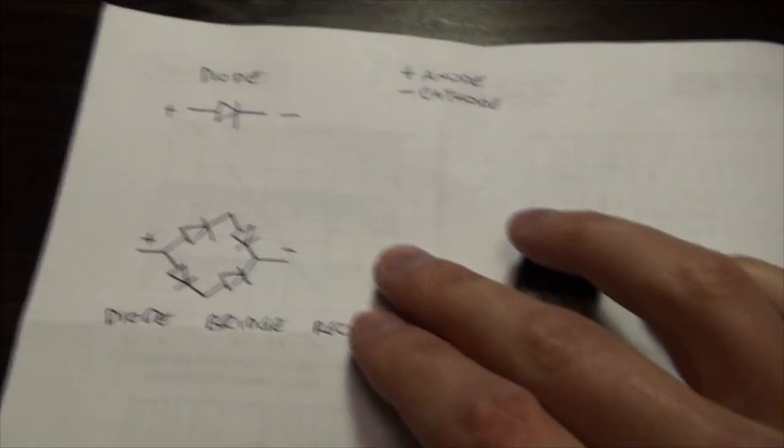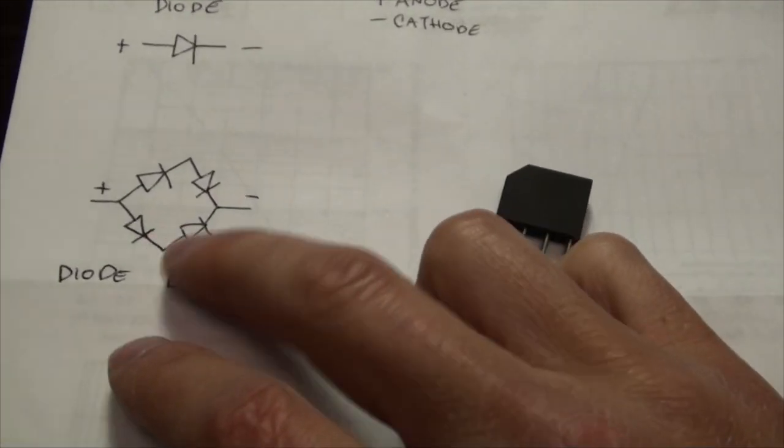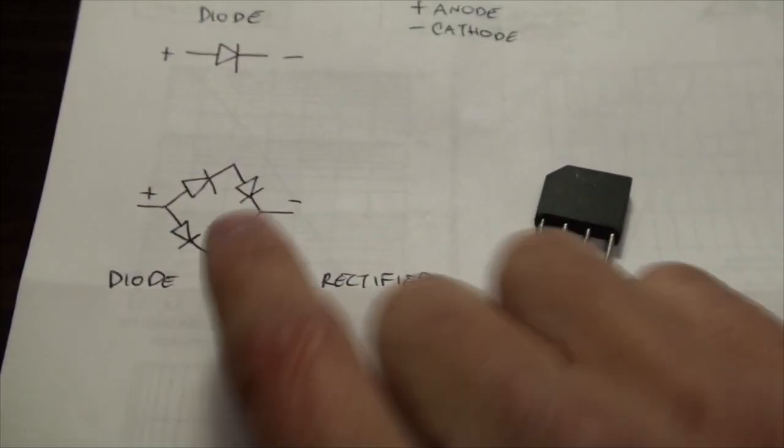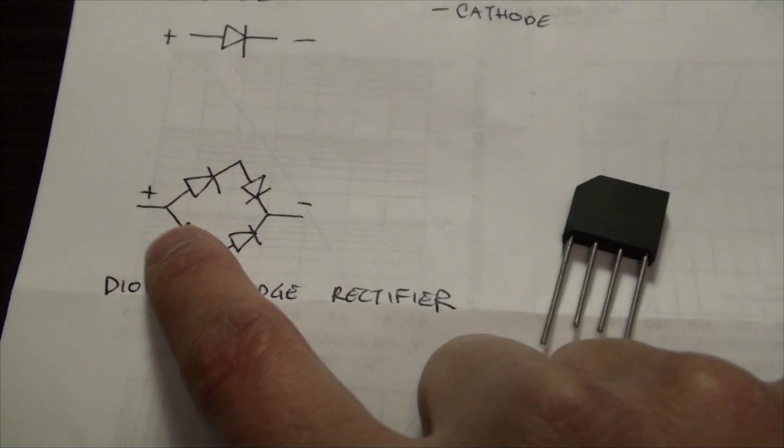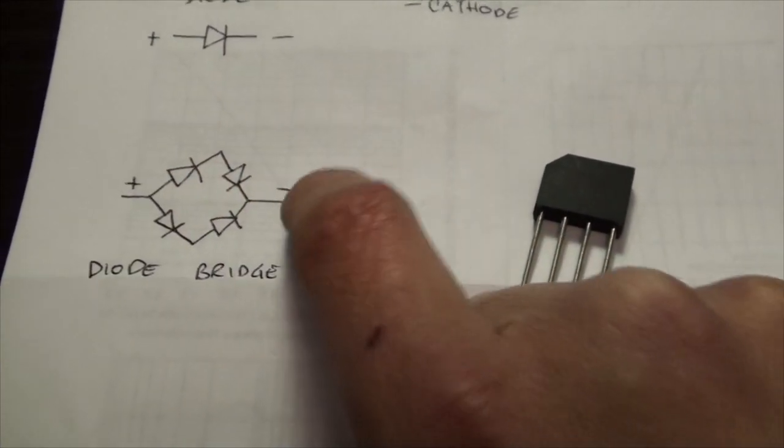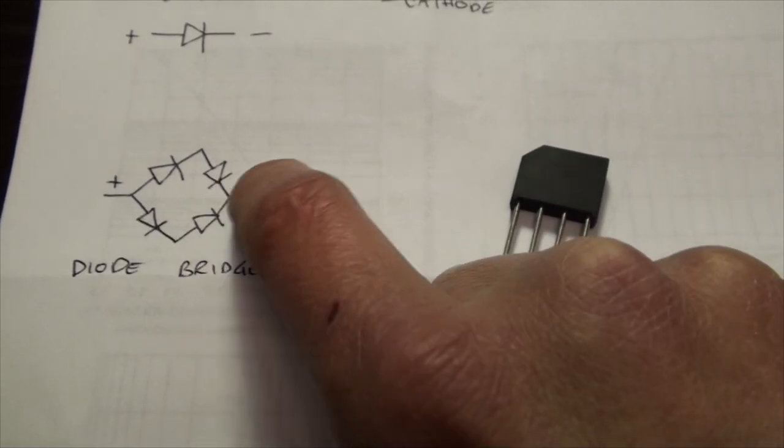A diode bridge rectifier is the same thing, only it's four different diodes all put together. These diodes allow flow in one direction, but if it ever tries to go the other way, it's blocked.